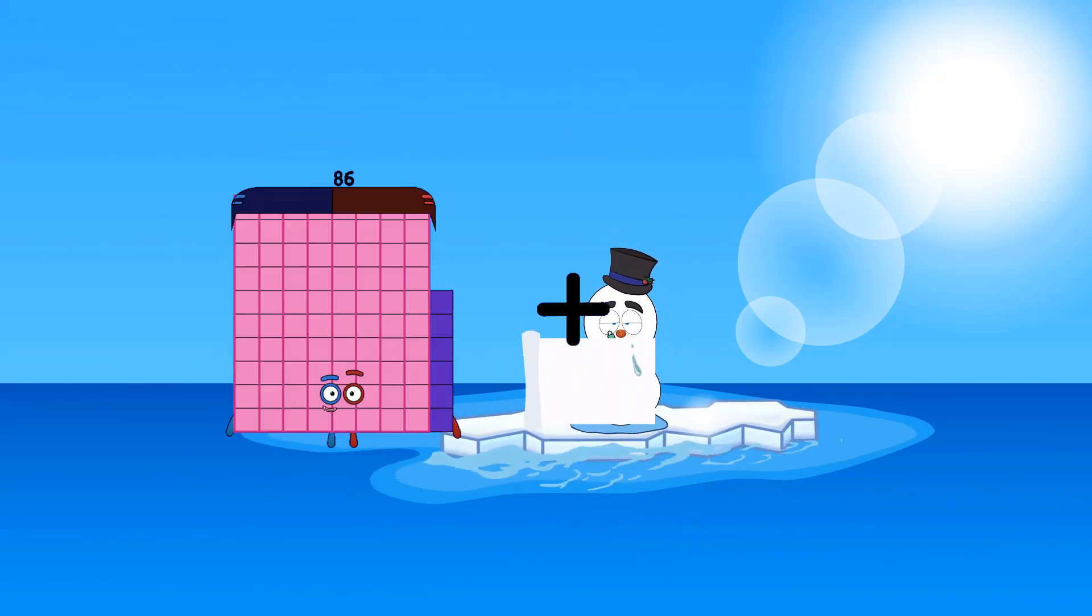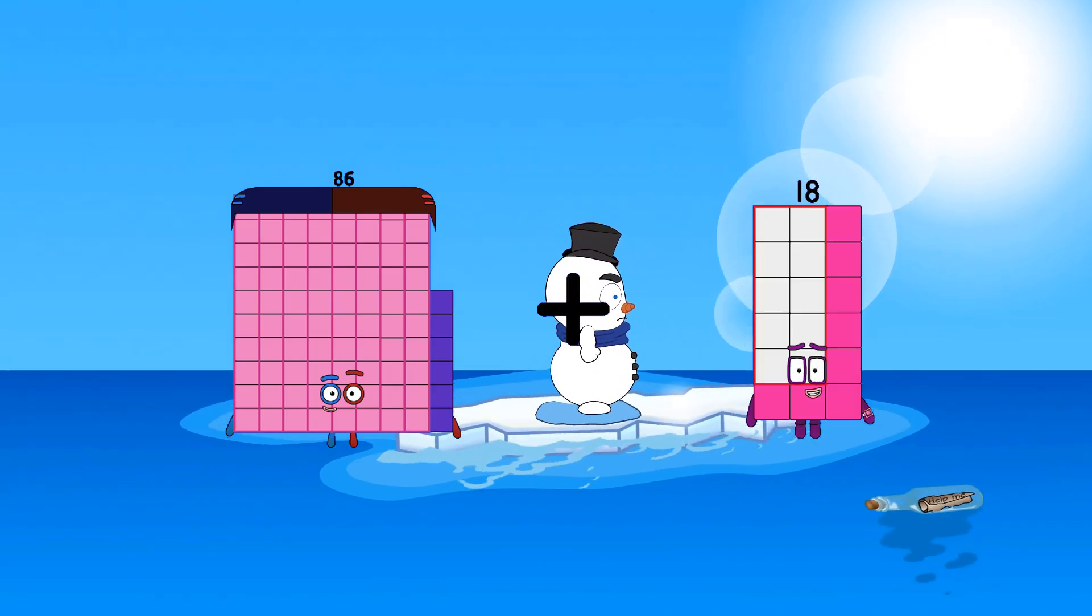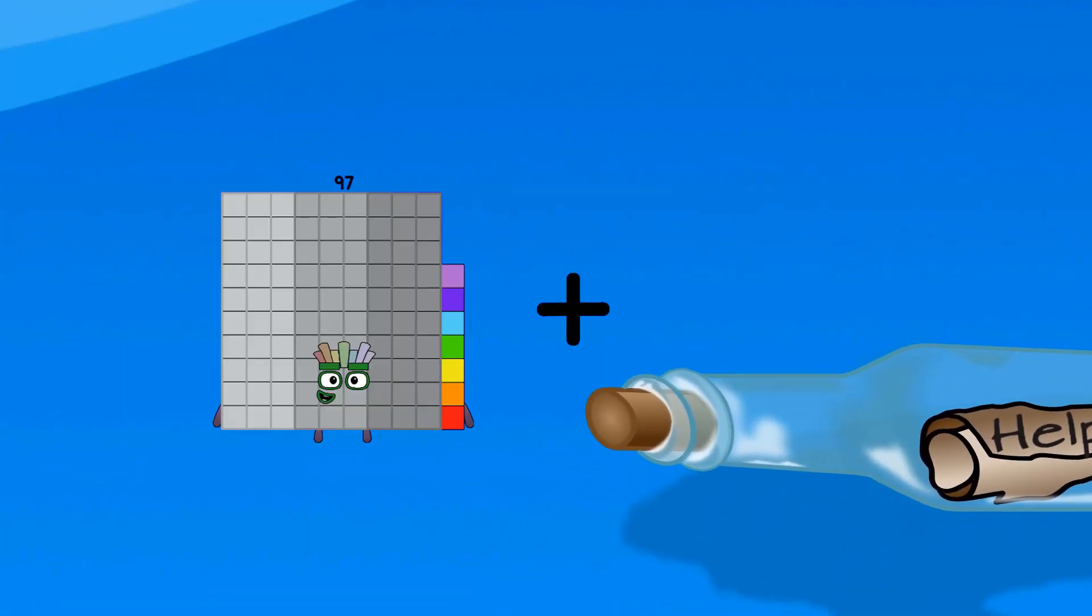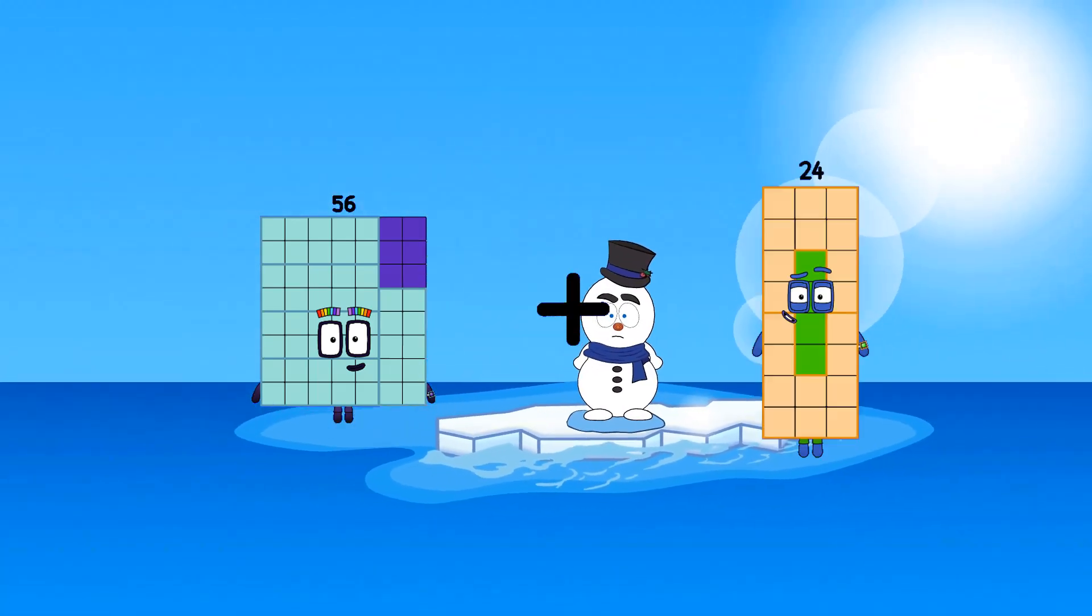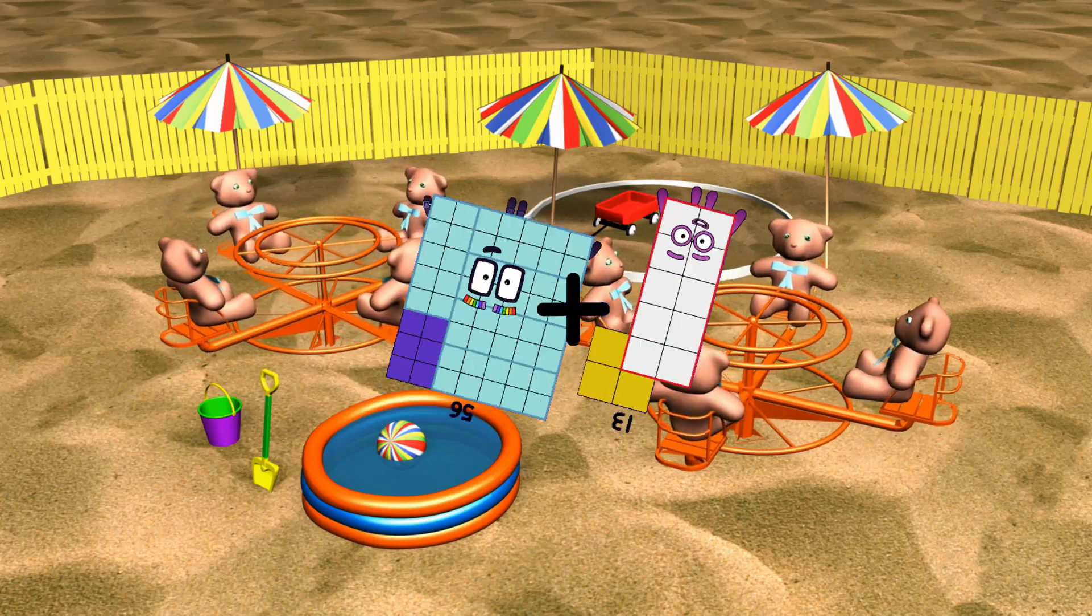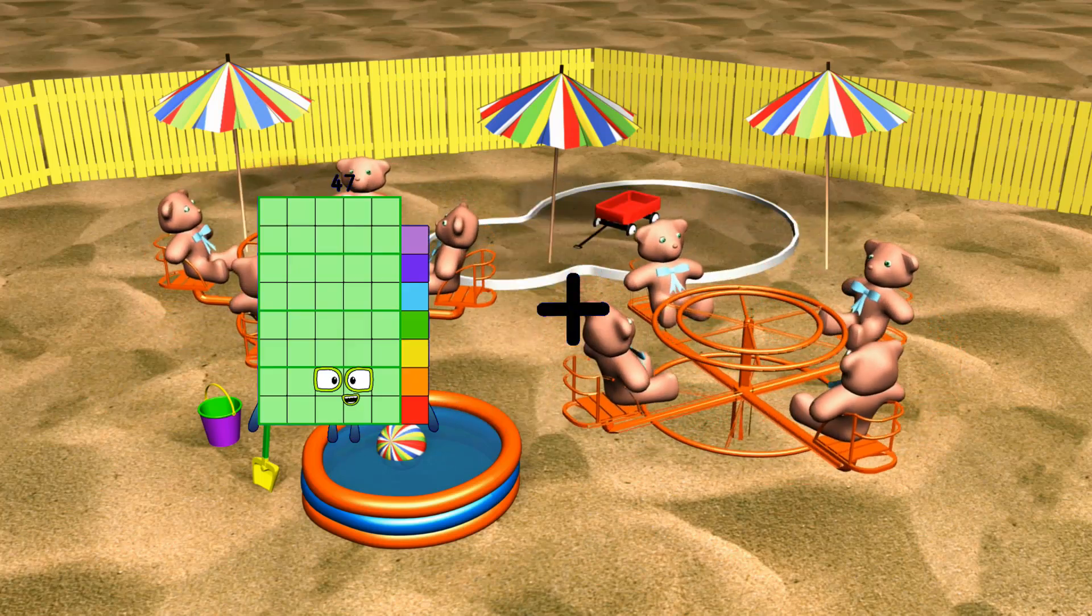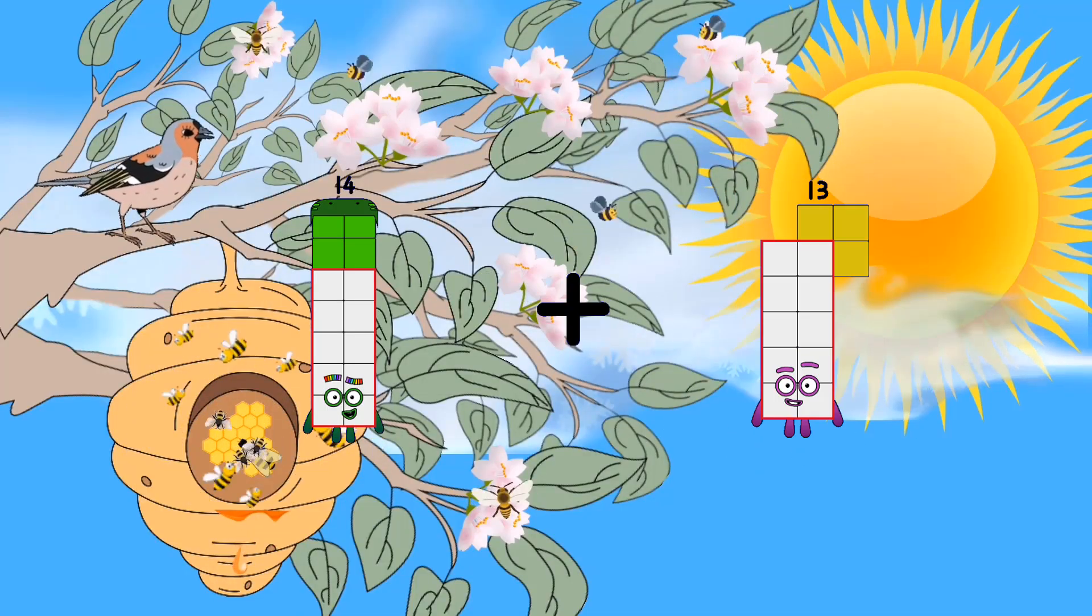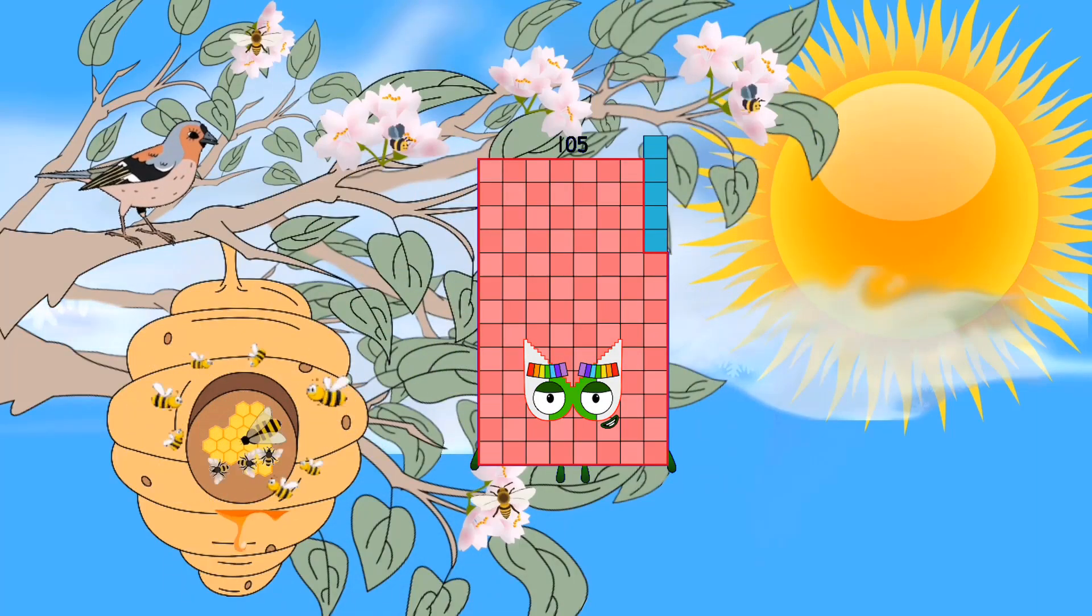86 minus 18 equals 80. 56 minus 13 equals 69. 14 minus 91 equals 105.